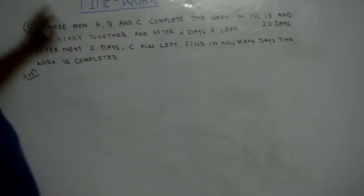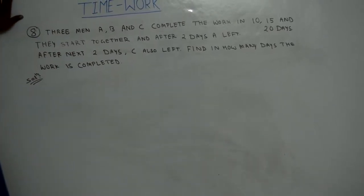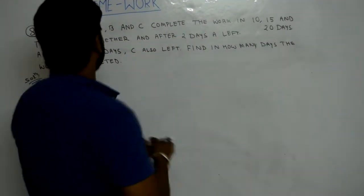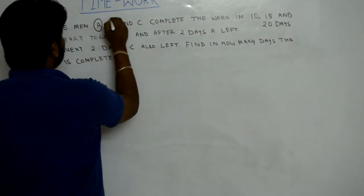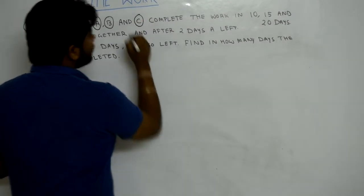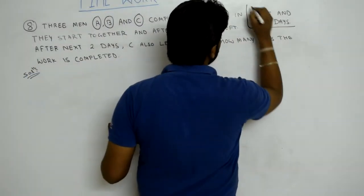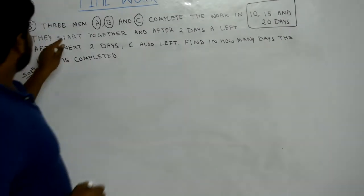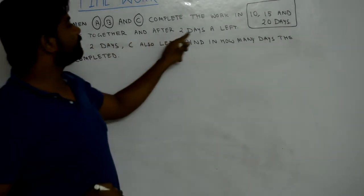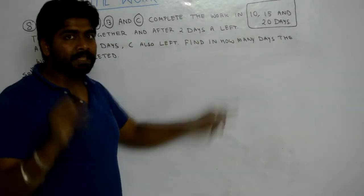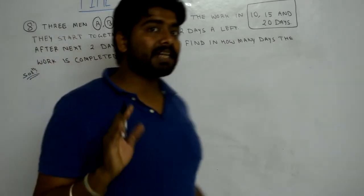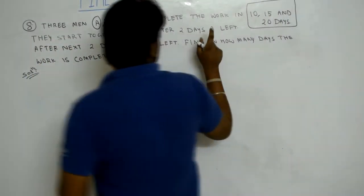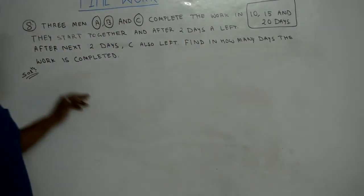In this question, three men A, B and C complete the work in 10, 15 and 20 days. They start together and after two days A left the work.